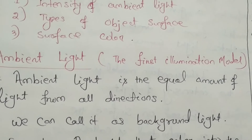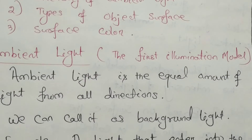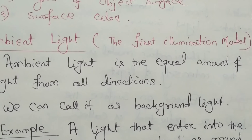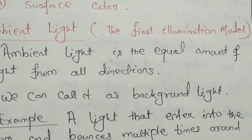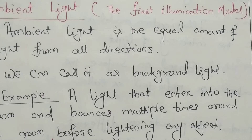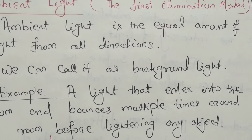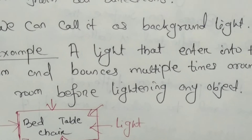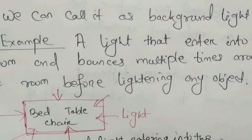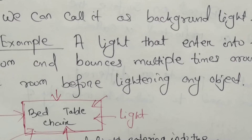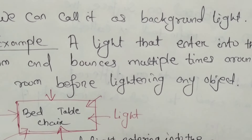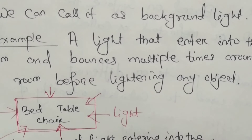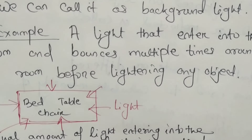Ambient light is the first illumination model. Ambient light is the equal amount of light from all directions — we can call it as the background light. For example, light enters into the room and bounces multiple times around the room before lightening any object. In the room there are different objects like bed, chair, table etc. Light entering into the room before it lightens any object is called as ambient light.